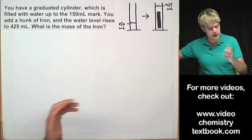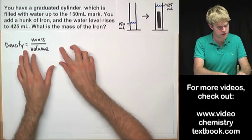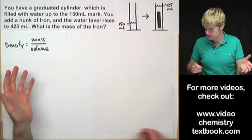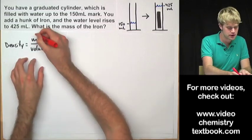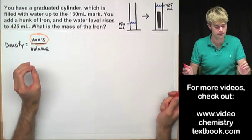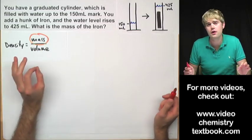We know we're dealing with density here, so these are the three variables that we're playing with. The question asks us what the mass of the iron is, so we know that it's going to be mass that we're solving for. Let's talk about how to get these other two variables.